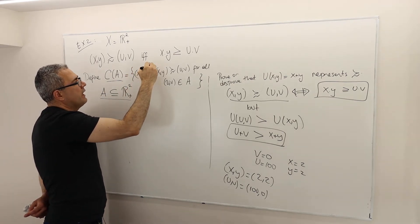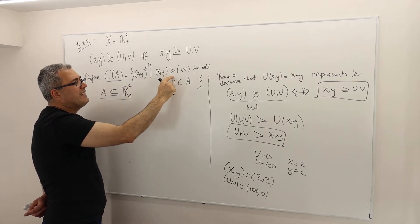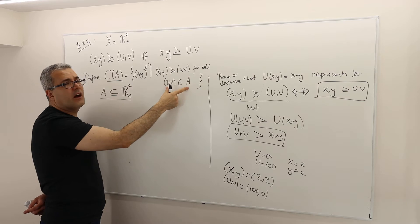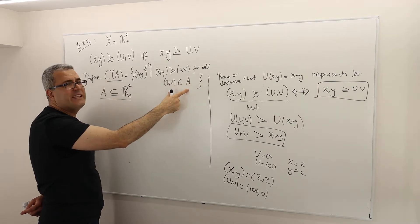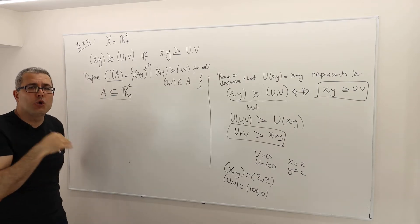obviously it's in A, right? So pick the bundle X, Y, where X, Y is at least as good as every other alternative, every other bundle in this set. Okay. So that's the choice behavior.